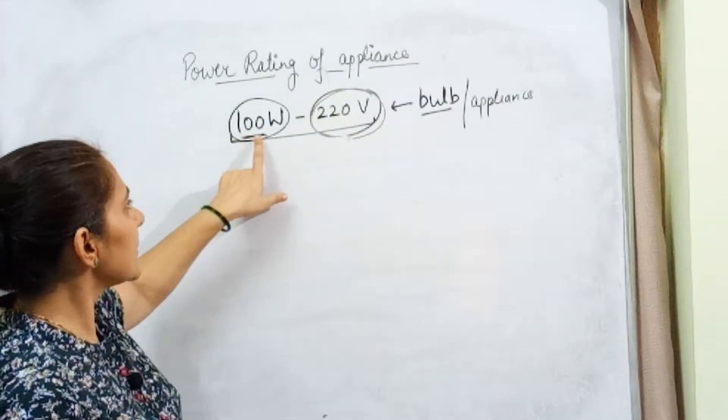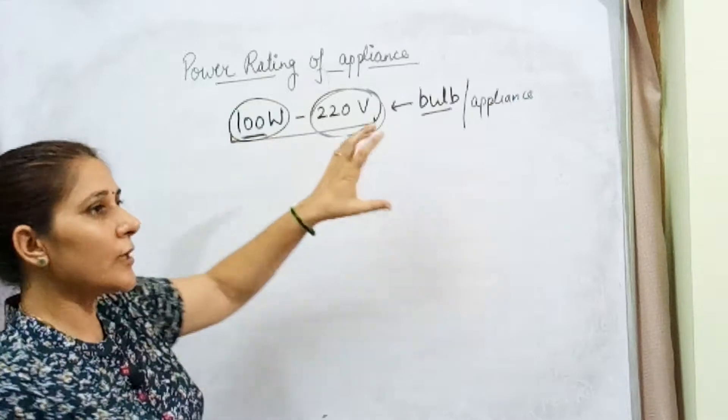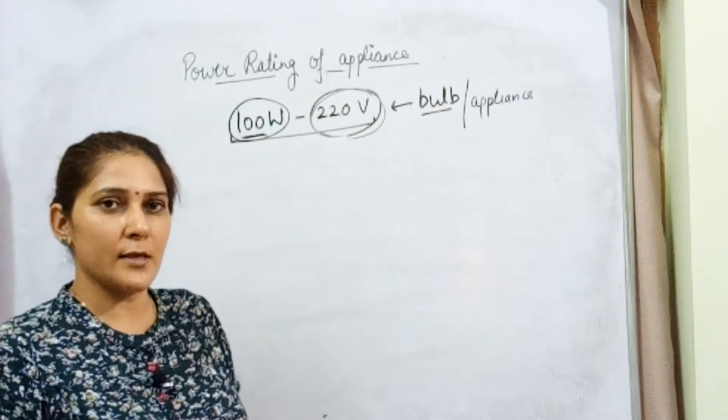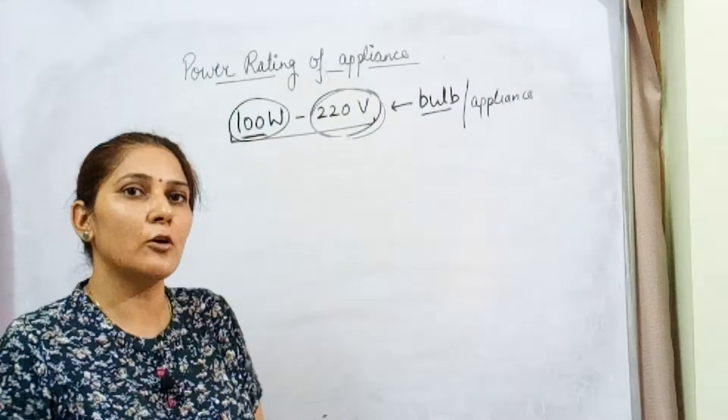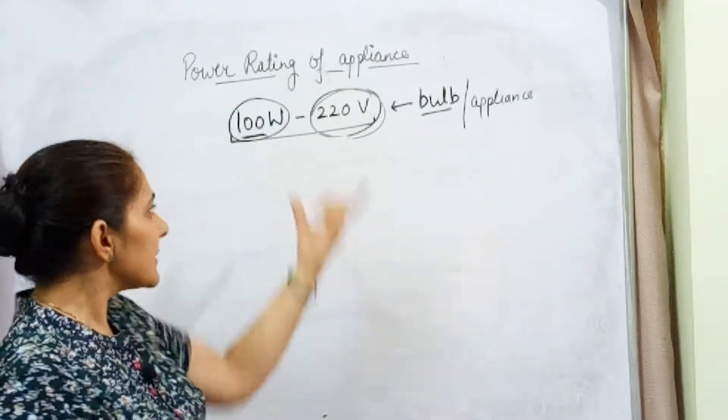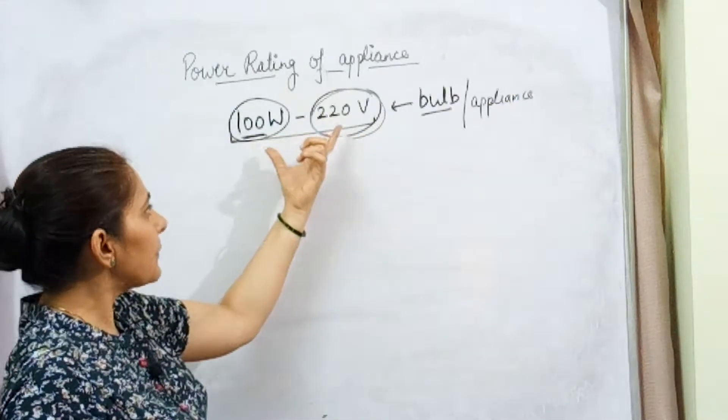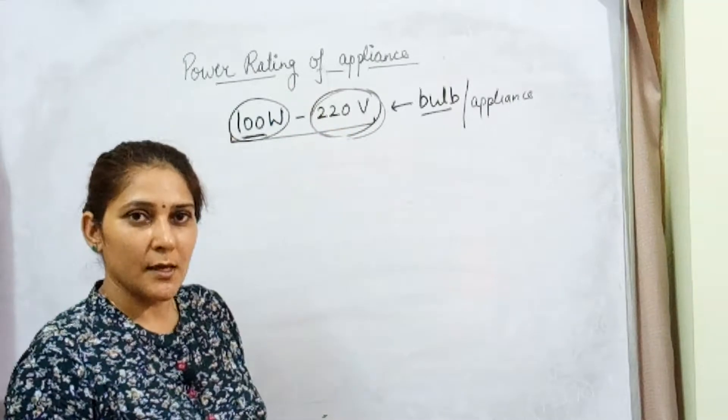If something is written this way on any of the appliances, what is the meaning of that? This is depicting the power rating of the appliance.